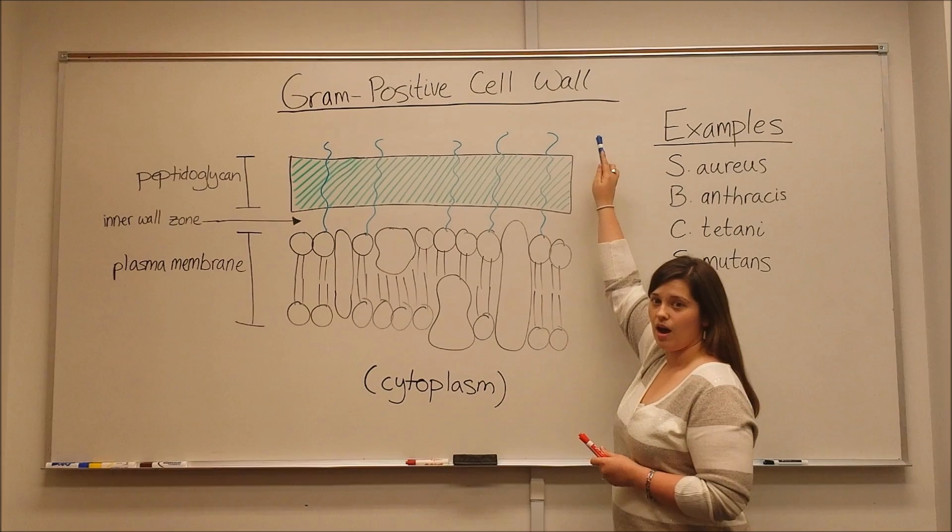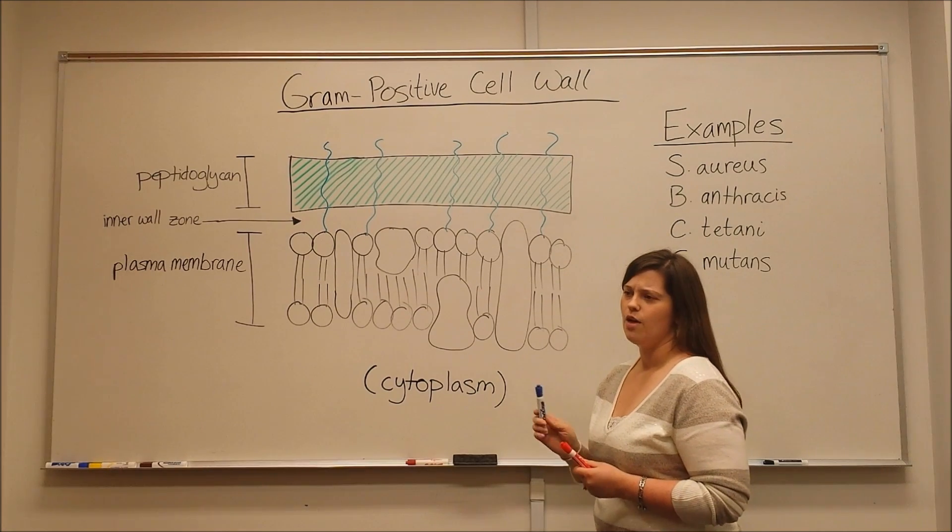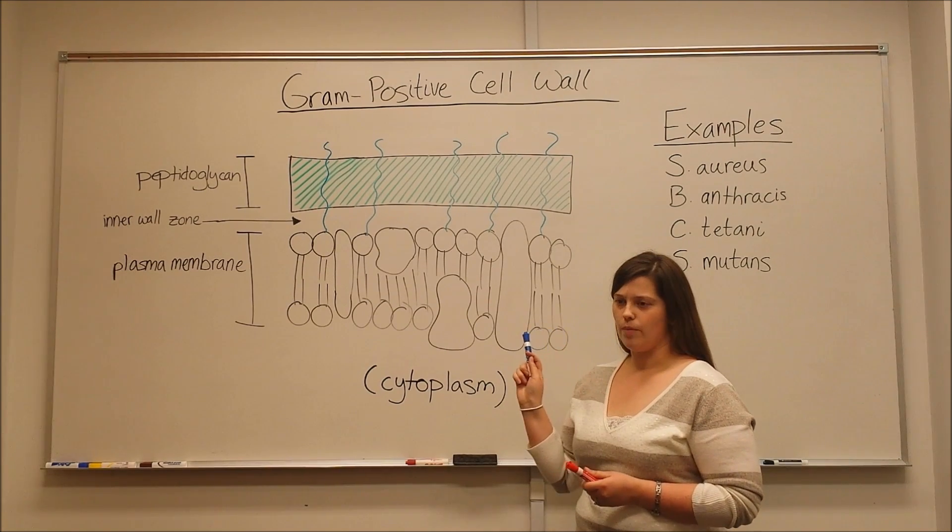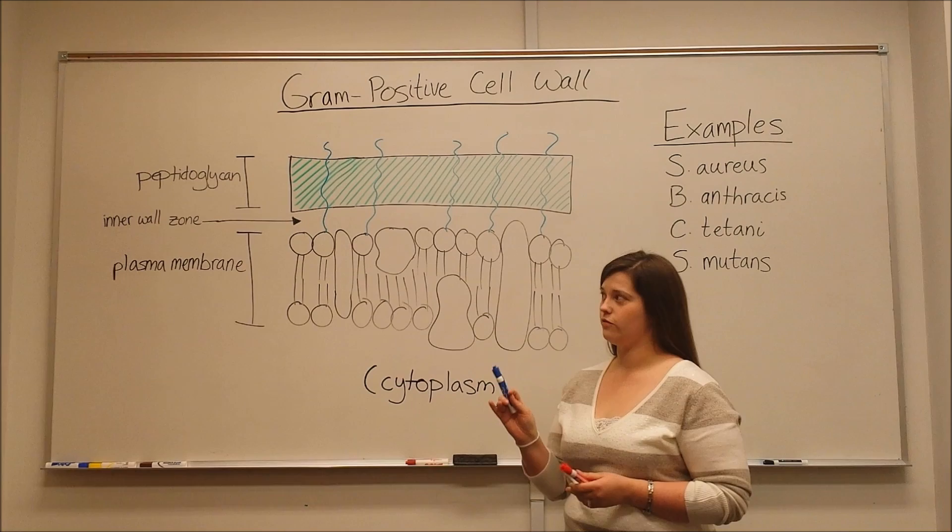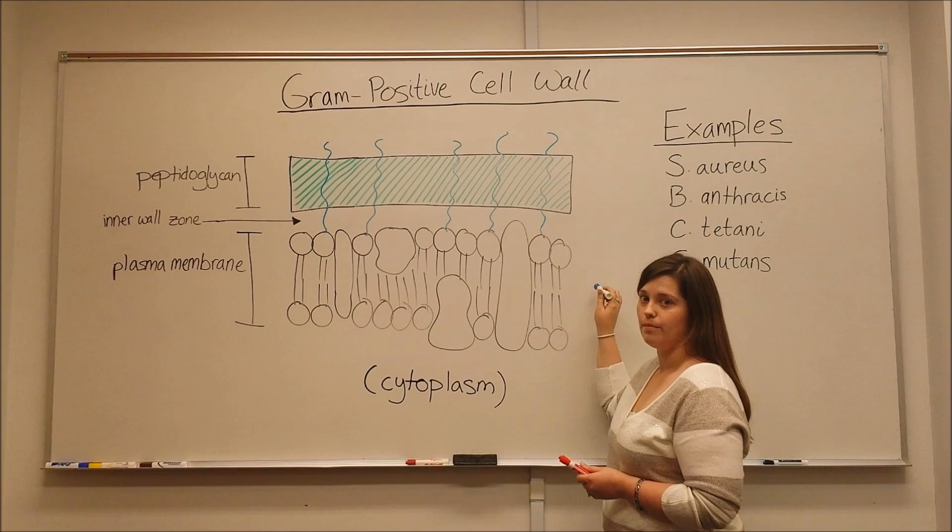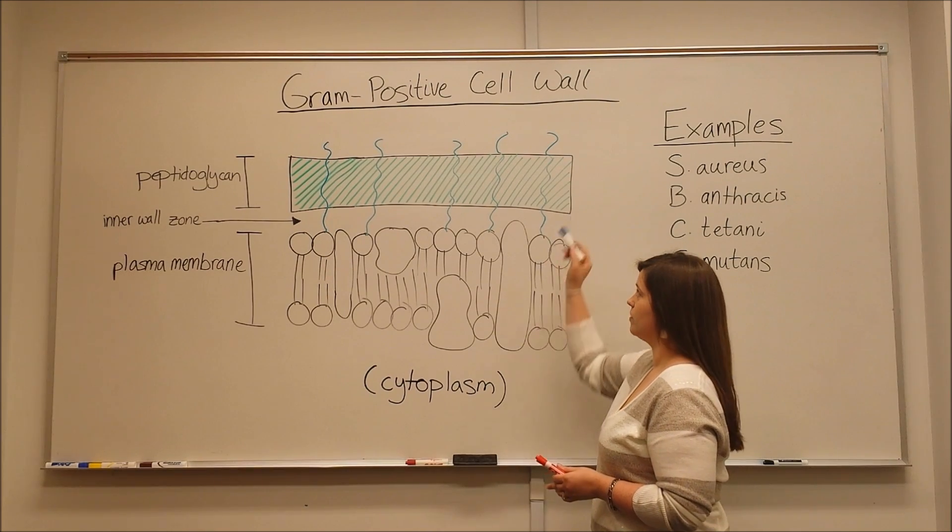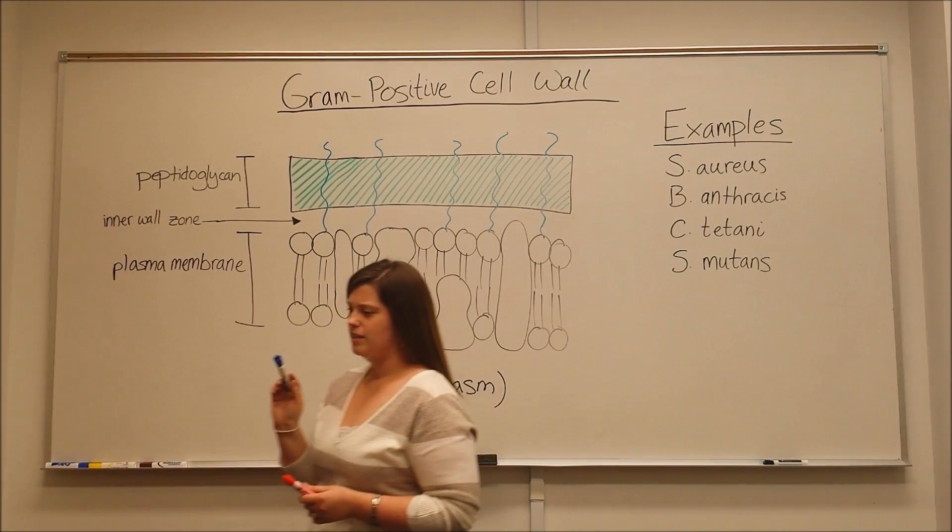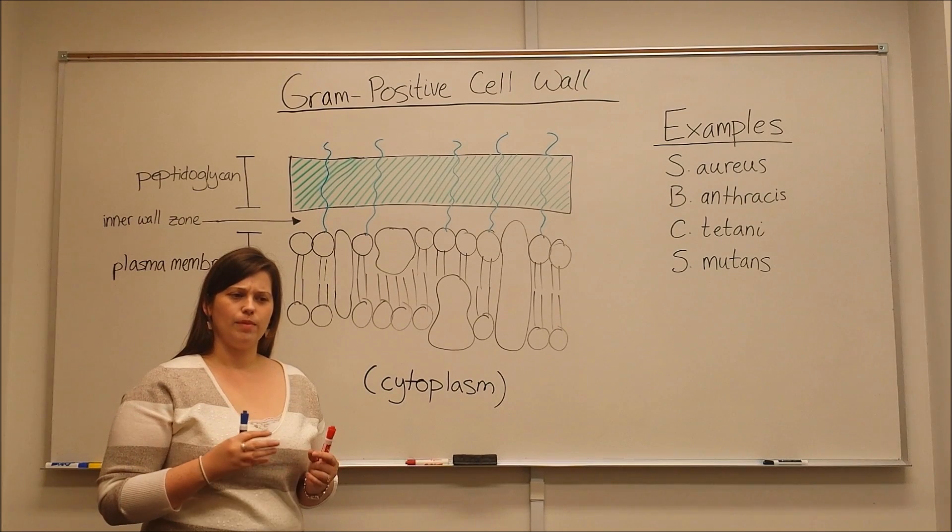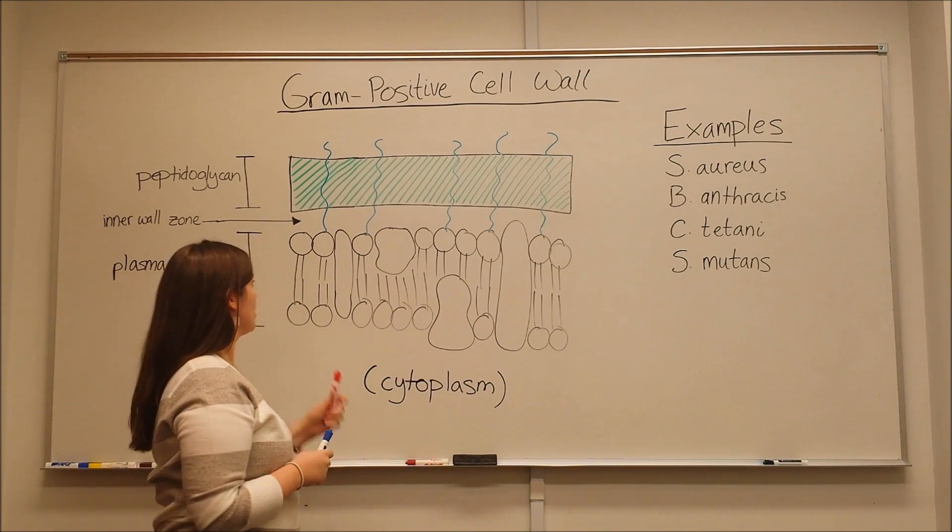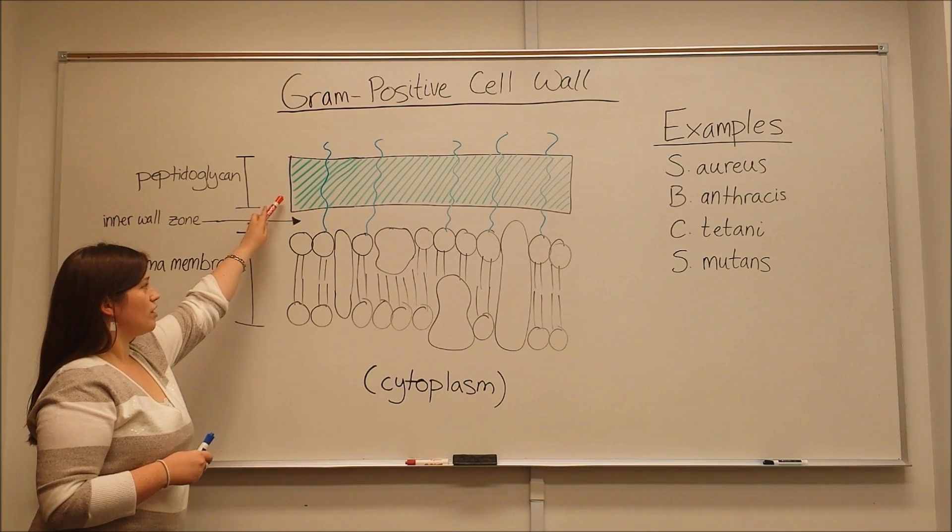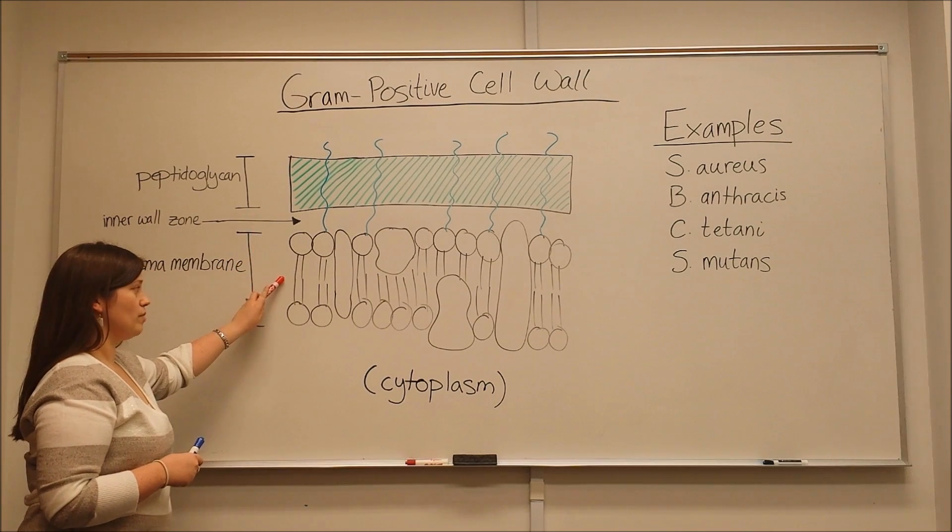So first let's talk about the gram positive type of bacteria. The way they are distinguished is between differences in their cell walls. With the gram positive cell wall, the two most important features are a thick layer of peptidoglycan and one membrane. Let's look at this in a little bit more depth. This thick layer of peptidoglycan is important for structure of the cell and for helping the bacteria cell maintain its shape. Then you have this inner wall zone that is between the thick peptidoglycan layer and the single membrane.